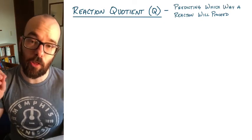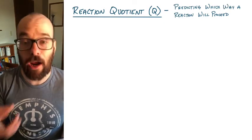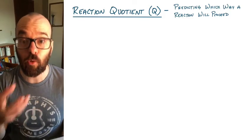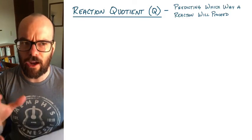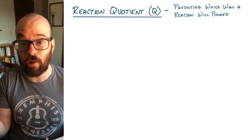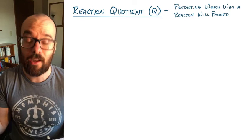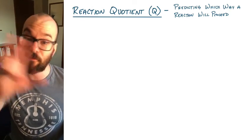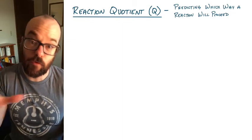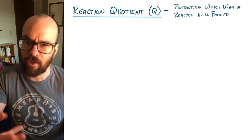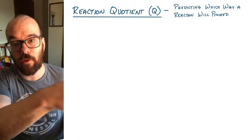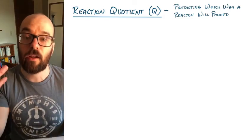In this video, we're going to take a look at something called the reaction quotient. The reaction quotient is a way to predict which way a reaction will proceed in order to reach equilibrium. Right now, are there more products than there should be at equilibrium, or are there more reactants? If there are more reactants, the reaction will move toward the products. If there are more products, some will convert back to reactants.